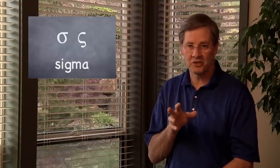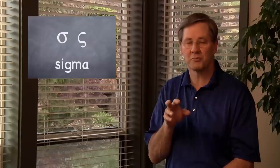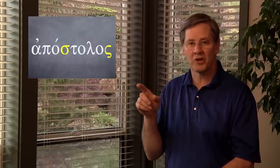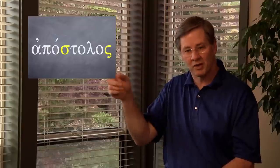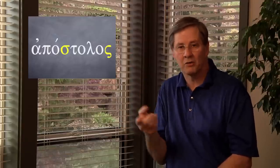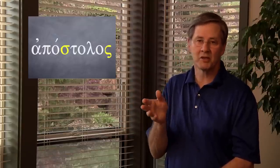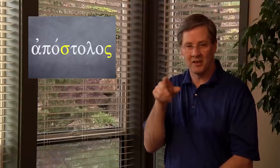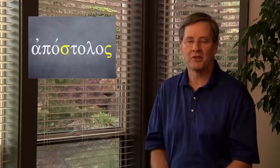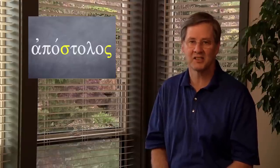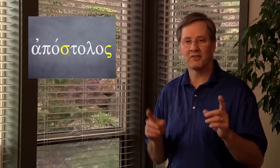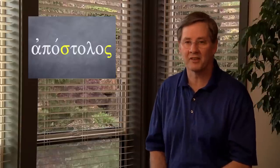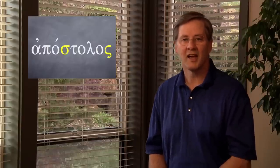One unusual thing about sigma is that it has two forms. If sigma is the last letter in a word, it's written in a second form where it goes below the line. If sigma occurs anywhere else in the word, you use the normal form. For example, in the word 'apostolos' you have two sigmas written the two different ways. It's just an orthographic difference — no difference in meaning at all.